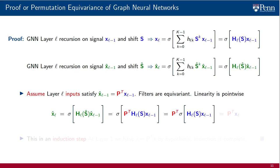Furthermore, given that the non-linearity is point-wise, the permutation matrix that is currently applied before the non-linearity can be applied after the non-linearity is taken. We can now identify that we are left with a permutation of the output of the perceptron that characterizes the layer l output of the GNN that runs with shift operator s. We have proven that layer l is permutation equivariant.